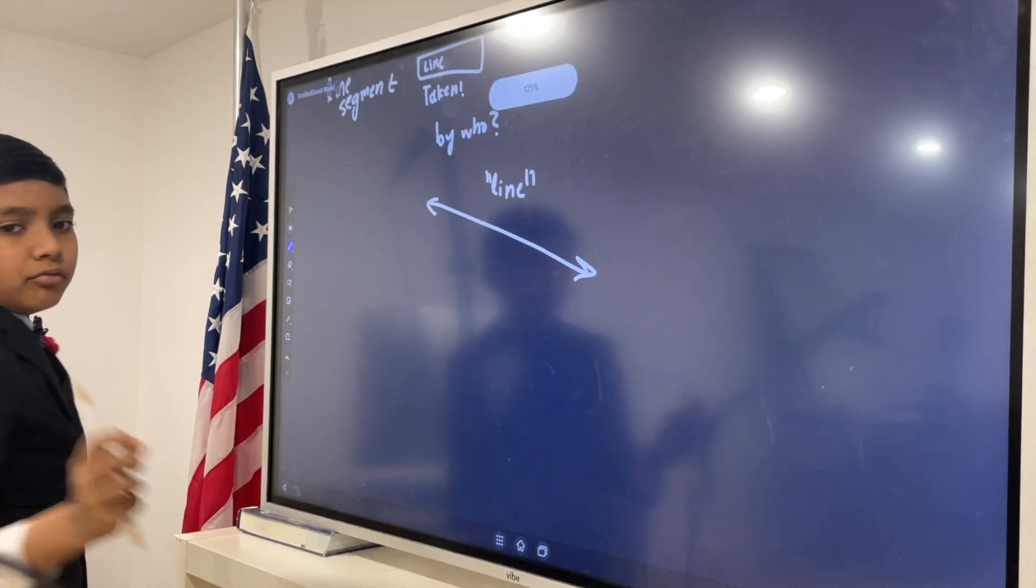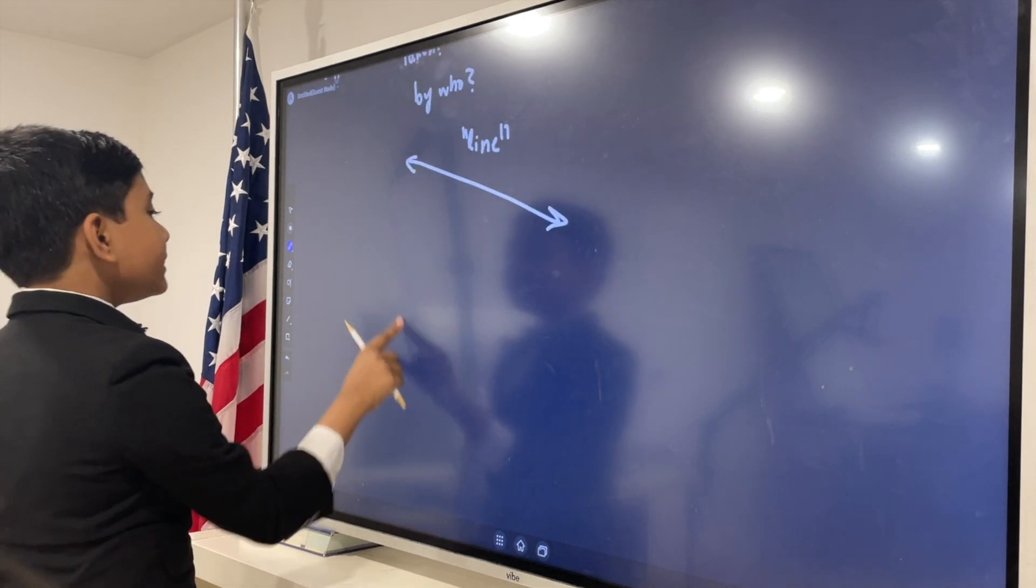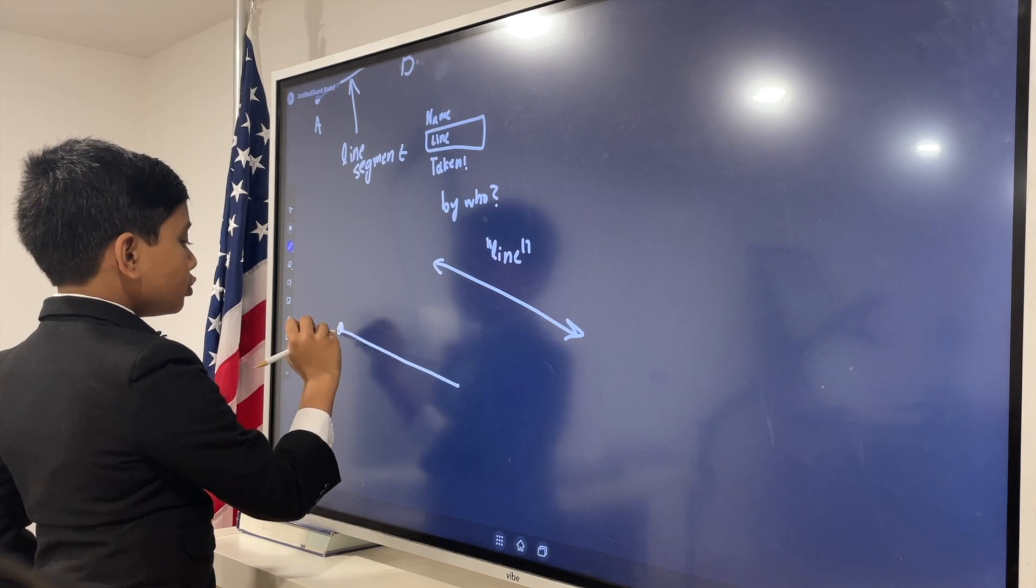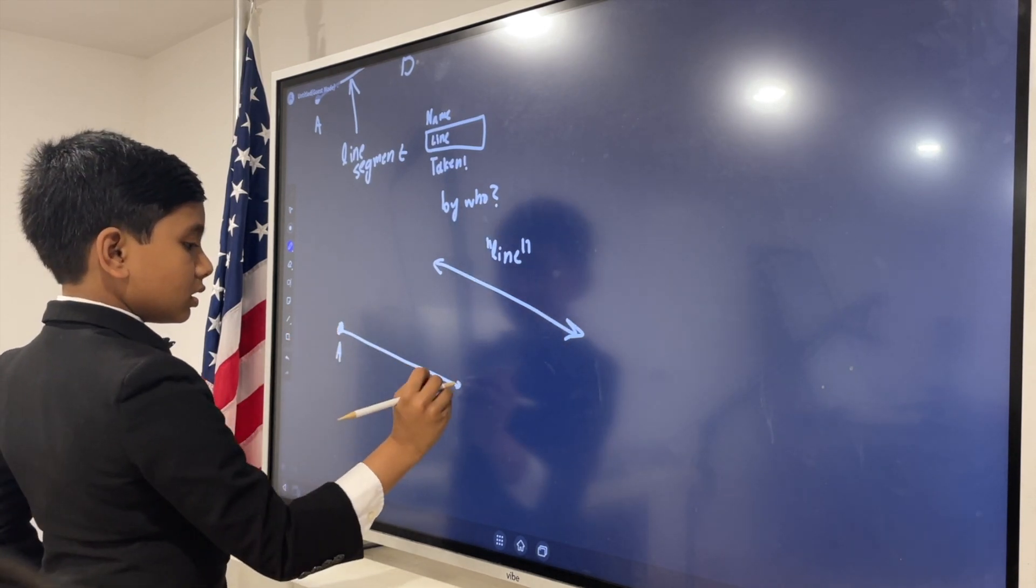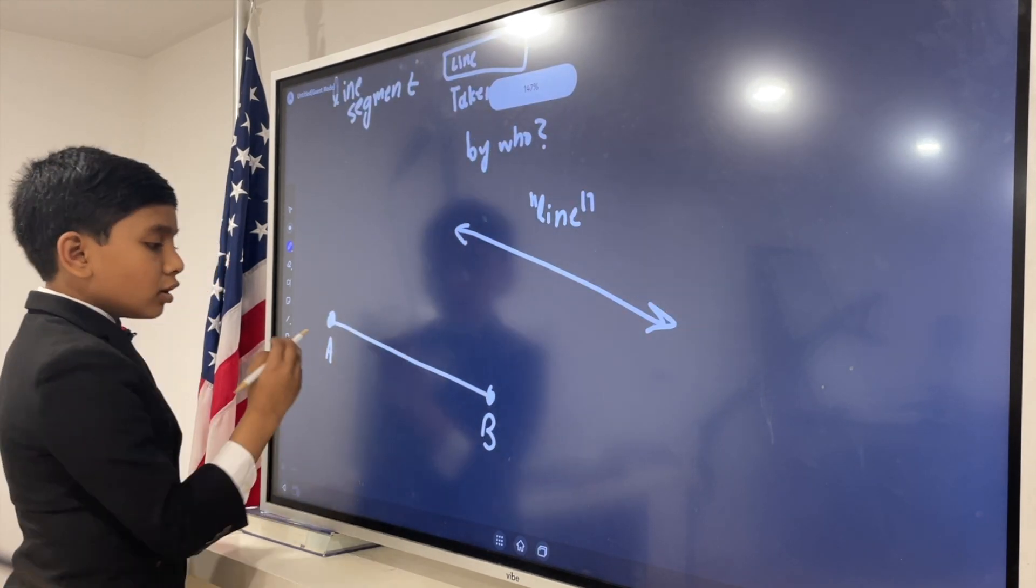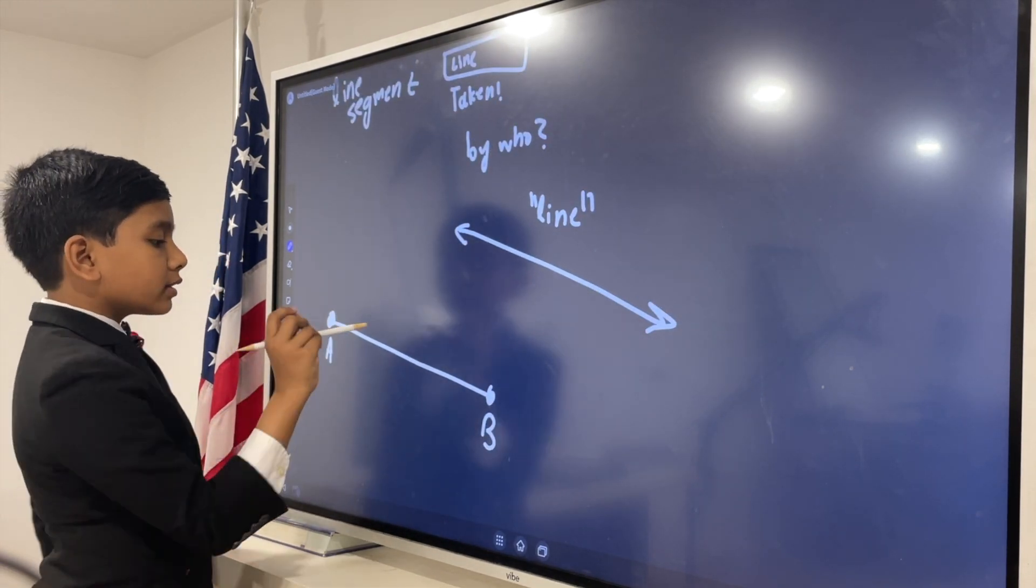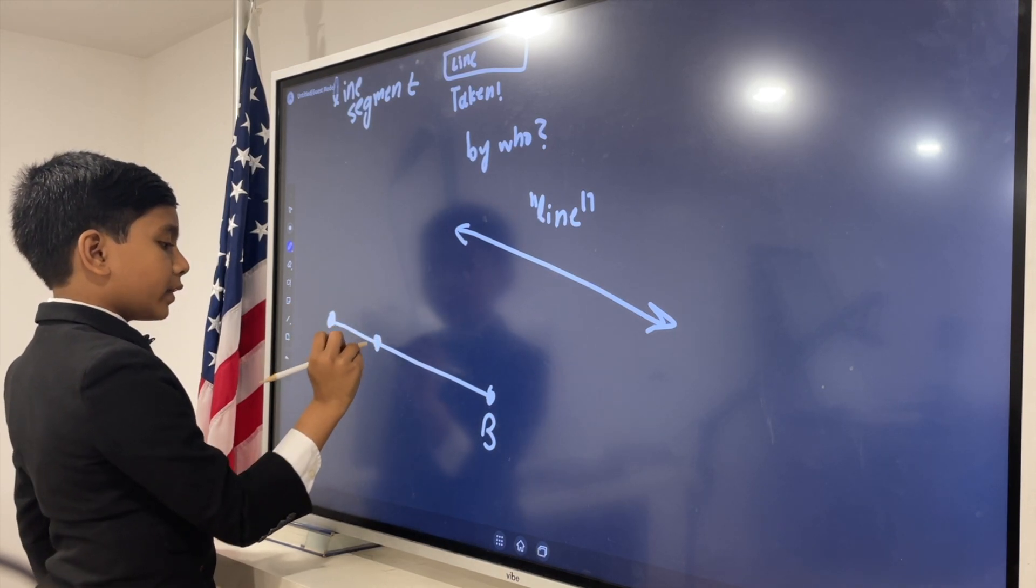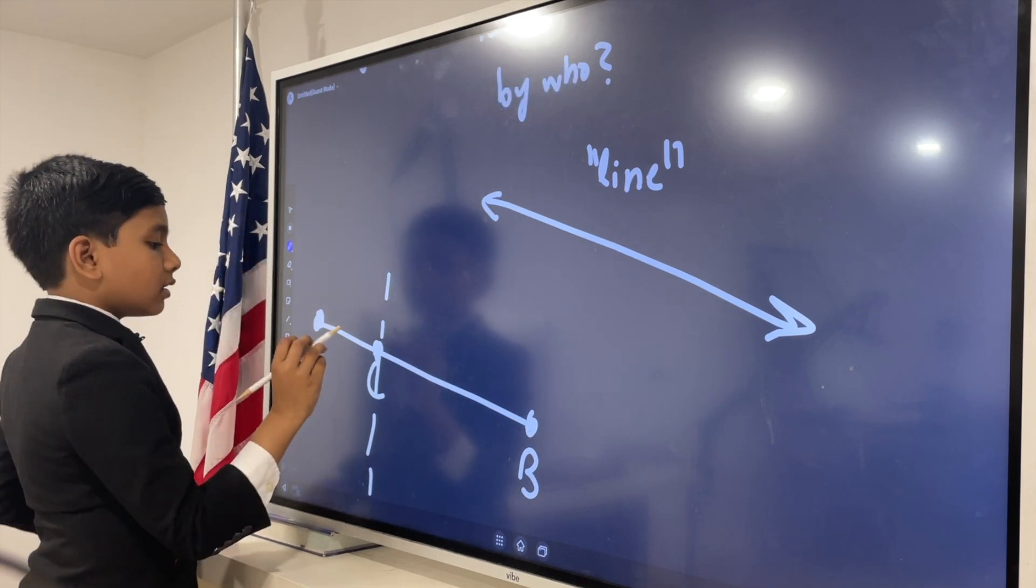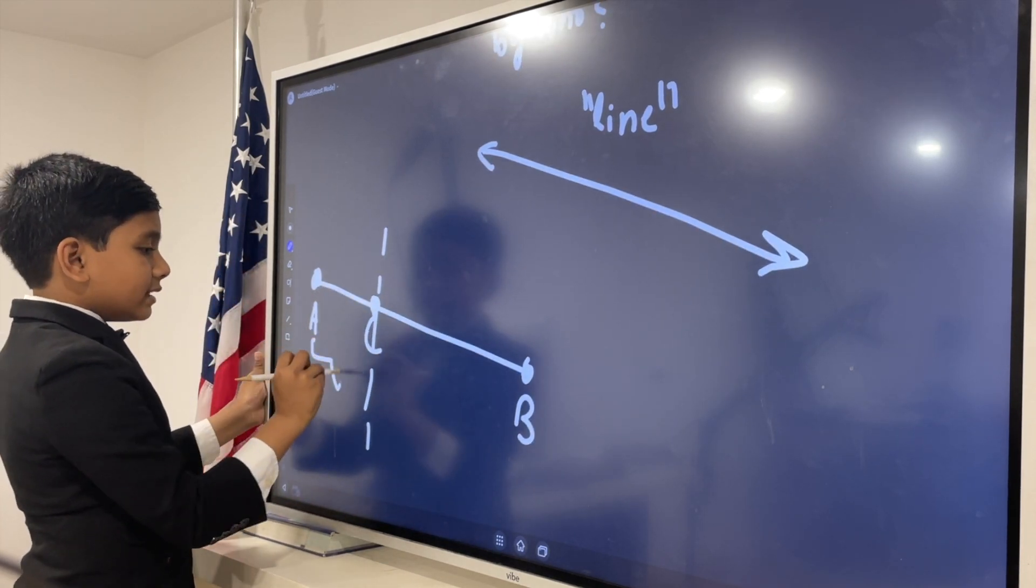And now, this line segment—if we take these two points, like A and B, and then we draw any point on the line between them, like for example C over here, we are dividing the line into AC and CB.